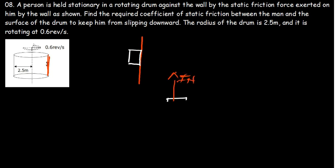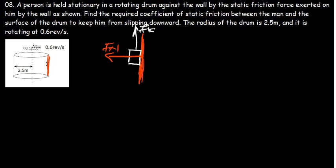We can clearly see that this is my surface here — this is the wall. Meaning that the force perpendicular to the wall is going to be the normal force. Now, for this object to move around the circle, there is a friction force pointed upward to help it not go downward. So we have the force pointing upward, which is the friction force. Since the object is inside the drum, the downward force is going to be mg.